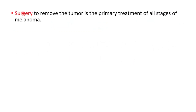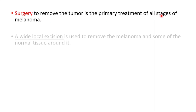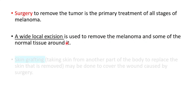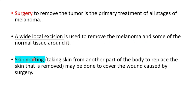For treatment, surgery to remove the tumor is the primary treatment of all stages of melanoma. A wide local excision is used to remove the melanoma and some of the normal tissue around it. Skin grafting — taking skin from another part of the body to replace the skin that is removed — may be done to cover the wound caused by surgery.